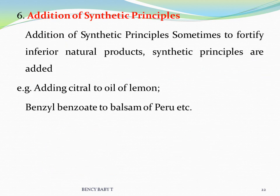The sixth method is the addition of synthetic principles. Sometimes synthetic principles are added to fortify inferior natural products. For example, synthetic citral is added to oil of lemon, and benzoyl is added to balsam of Peru. These synthetic chemicals are produced in the lab to replicate the flavor or aroma of the natural product.